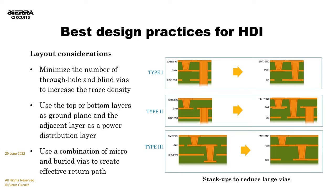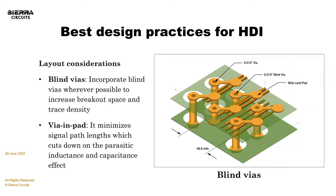Another consideration is to use your top and bottom layers as ground planes and the adjacent layer as a power distribution layer. The ground connection to the component pins can be made directly on the outer layers, and connections to the power distribution layers can be made with the microvias. As you decide your stack-up, you want to make sure you have effective return paths — that's always a very important consideration. Blind vias can be placed on inner layers to provide additional breakout space, and center-to-center distances on inner layers can be adjusted to offer more room for trace routing.